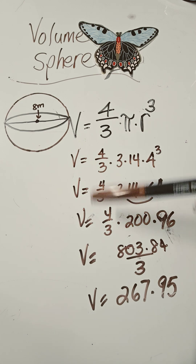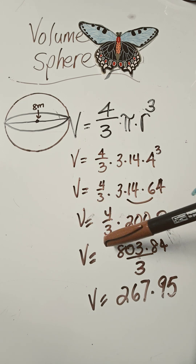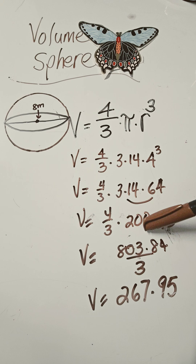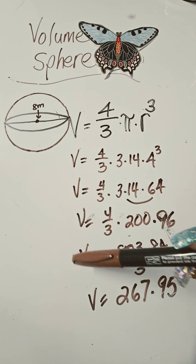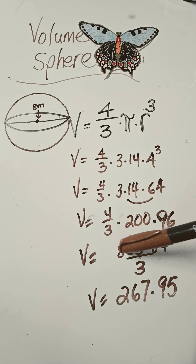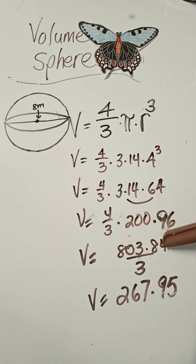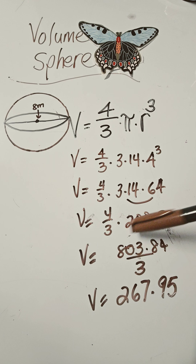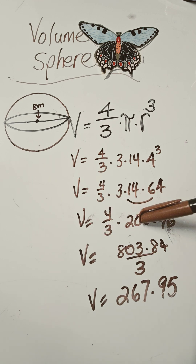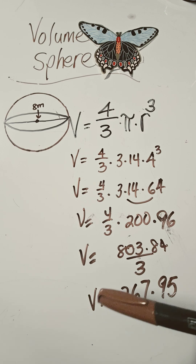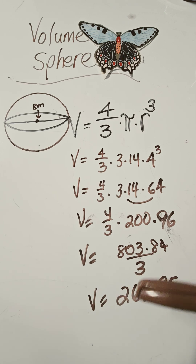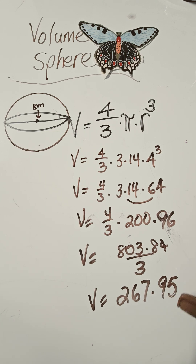I multiplied these two and got volume equals four thirds times 200.96. Then I went volume equals 803.84 divided by three, because I did four times 200.96 divided by three. And our volume, our space on the inside, is 267.95 m³.